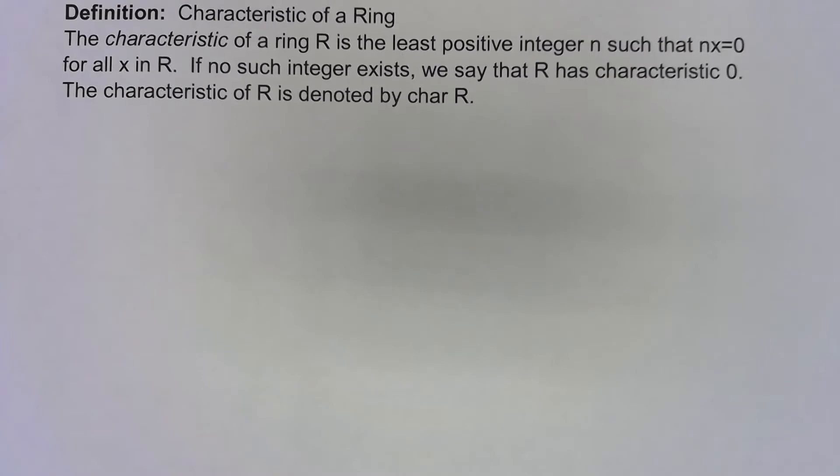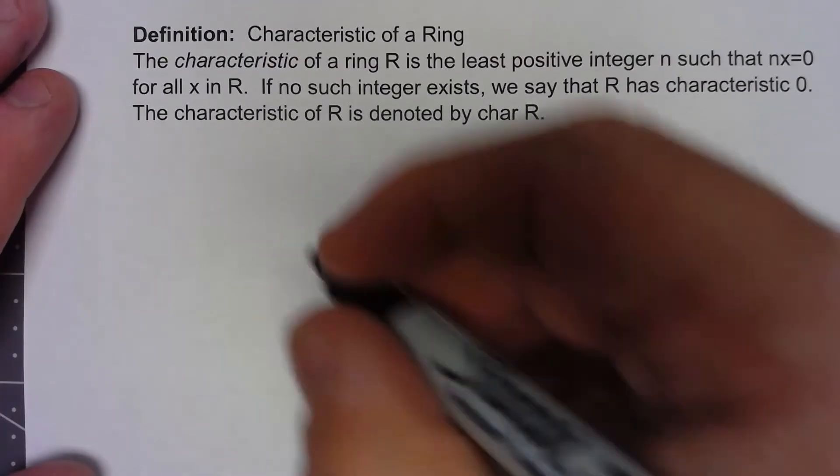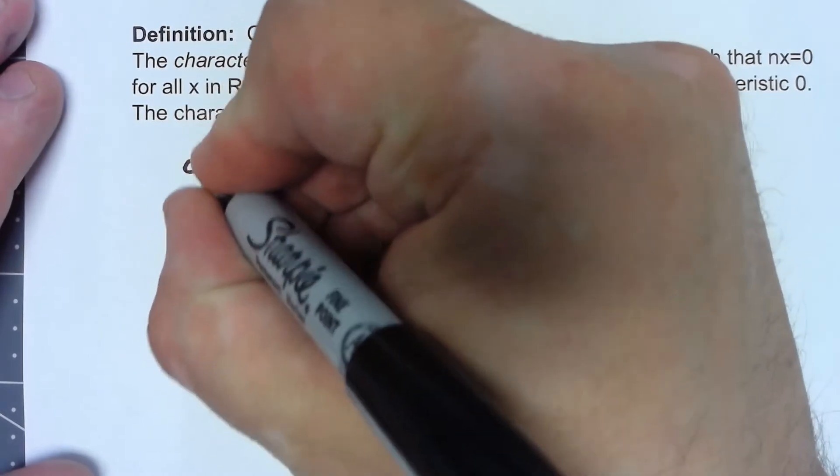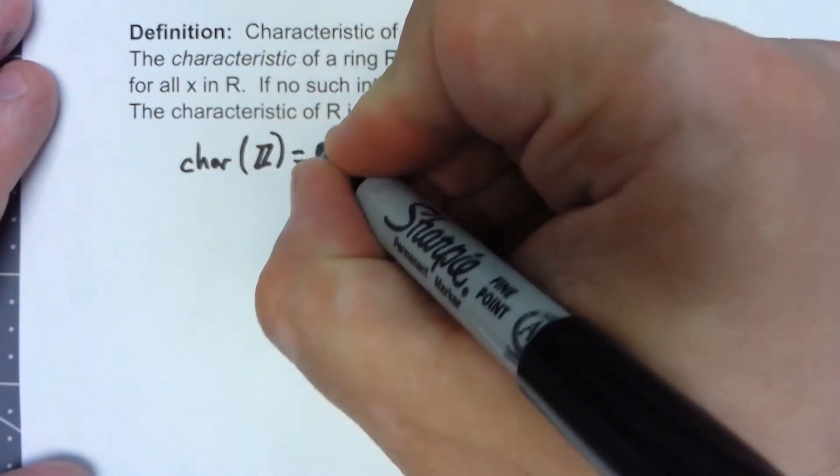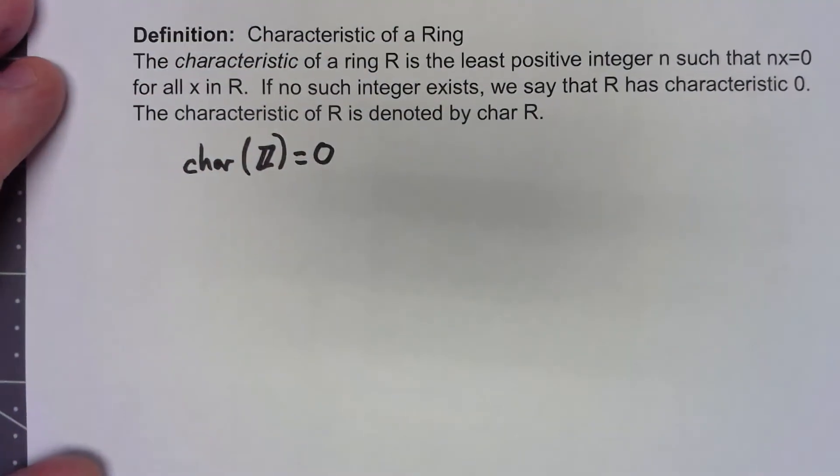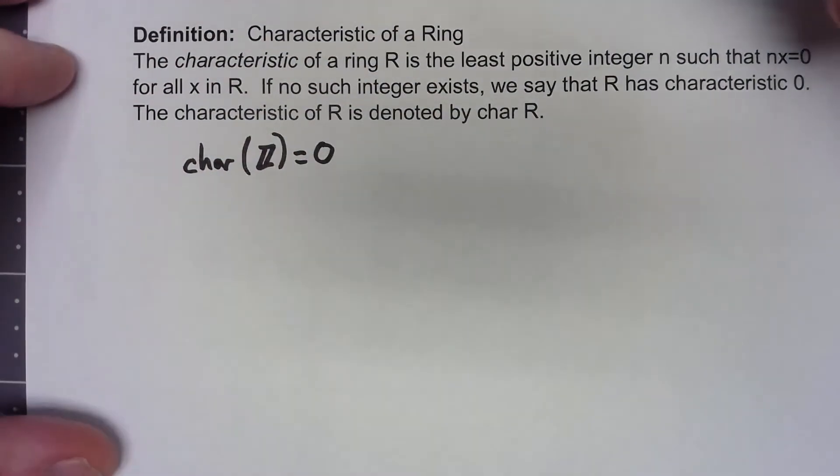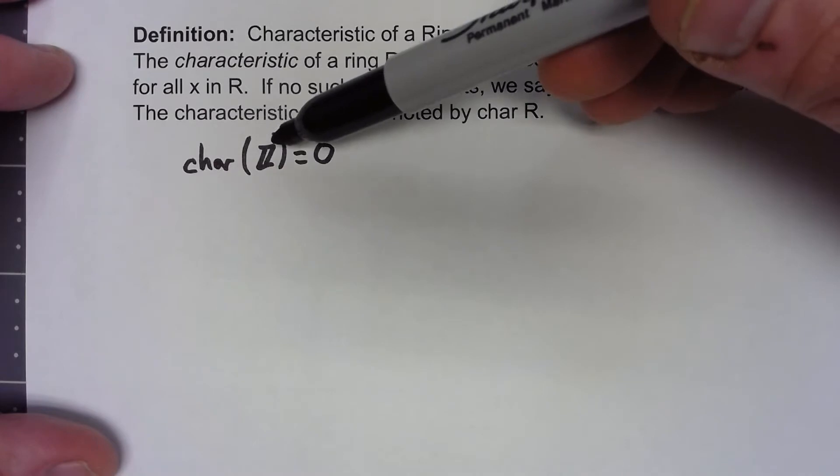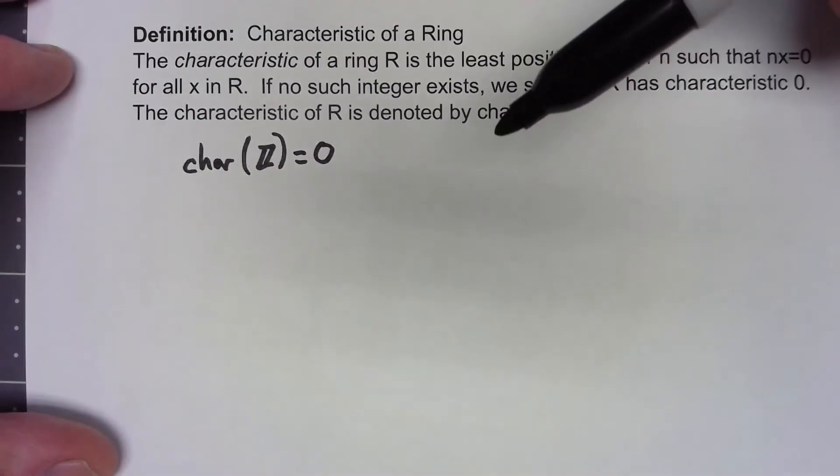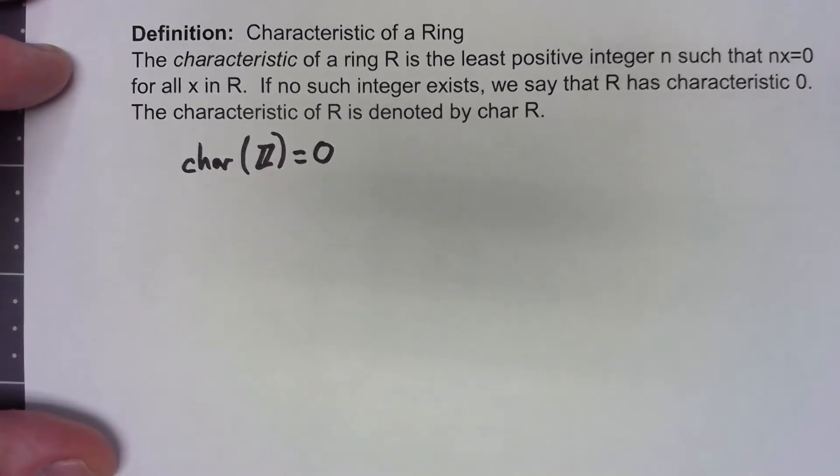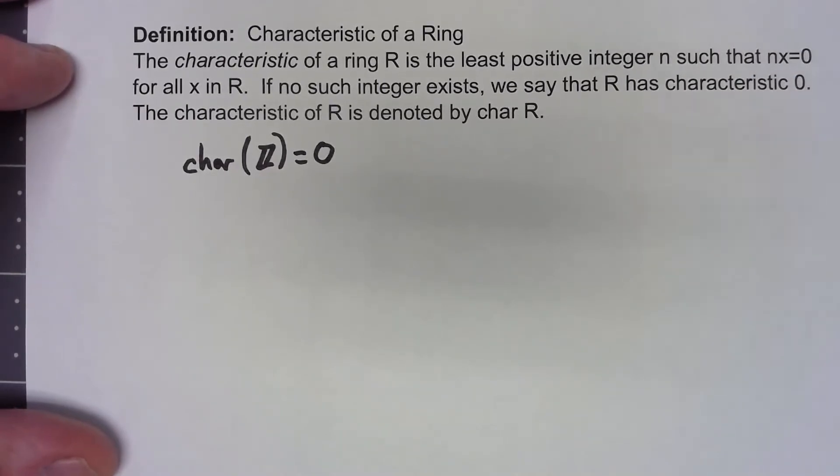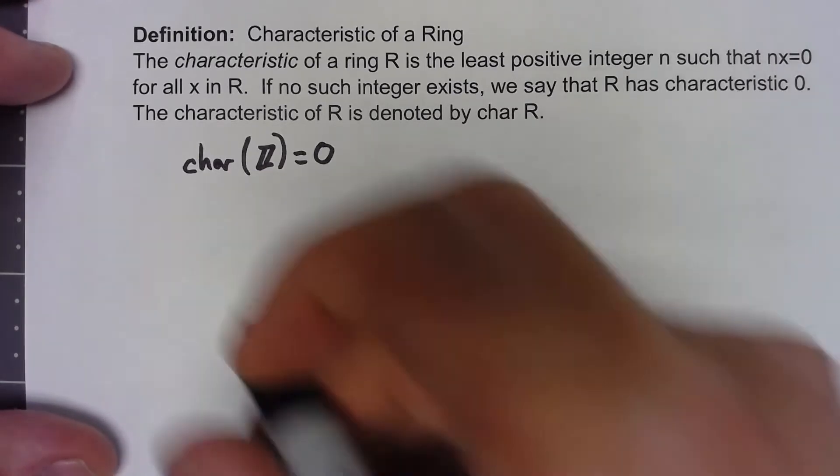Let's first start with one where the characteristic is 0. The characteristic of the integers is 0, and that's pretty clear. You take any nonzero element of the integers, it doesn't matter how many times we add it to itself, you're always just getting bigger and bigger things. You're never going to get 0.